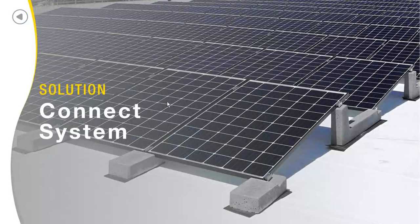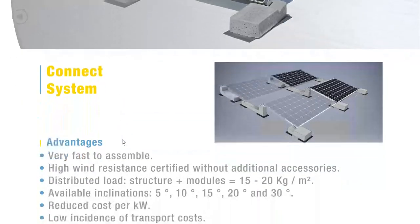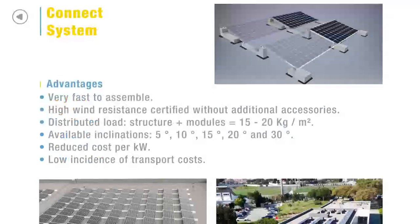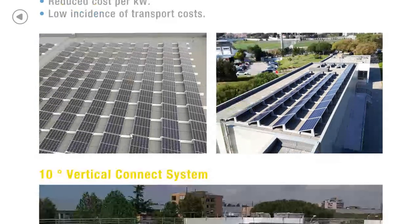That brings us to our Connect system. It is a highly wind-resistant system, and it has many additional advantages. It is very fast to install — you just need to place the sheath under it and the ballast. It comes with different inclinations: for the Connect system we have chosen 5, 10, 15, 20, and 30 degrees. The Connect system was originally created to install panels horizontally, and then we developed a vertical solution as well — this is how the 10-degree vertical Connect system was born. We chose 10 degrees because it is an inclination that suits everyone.